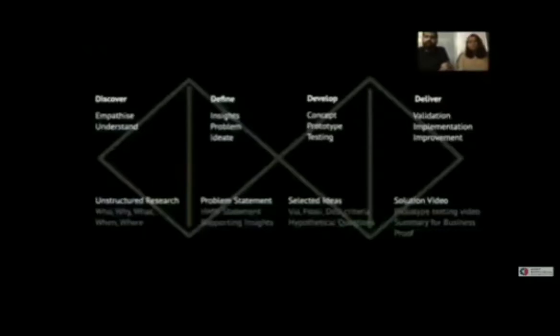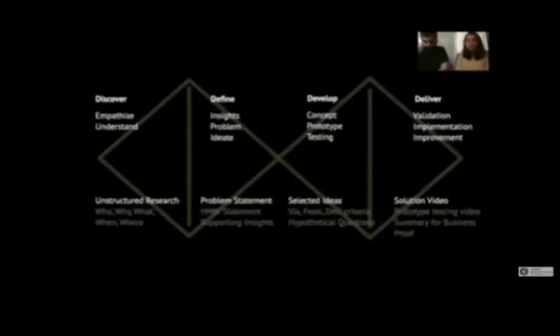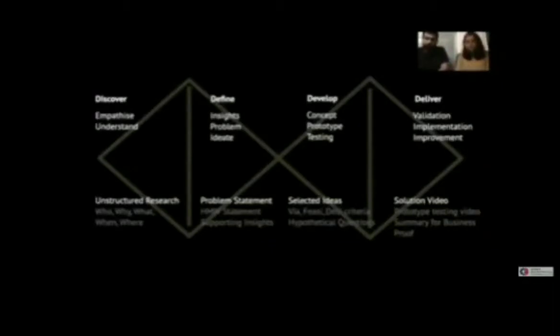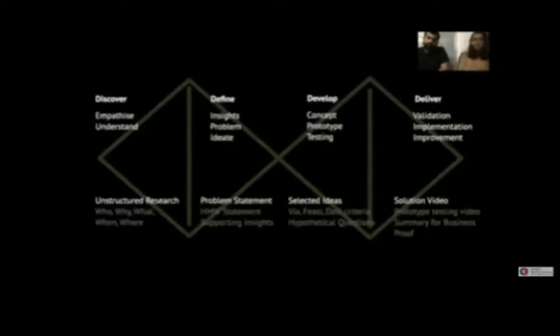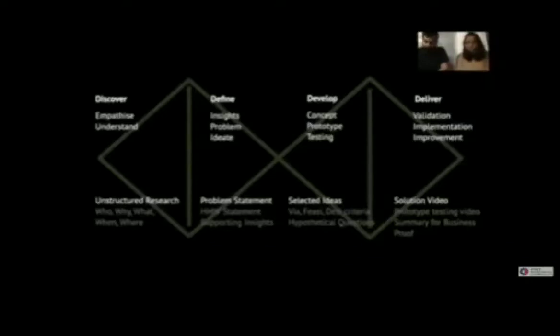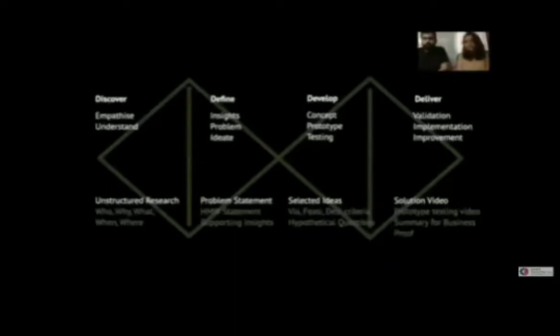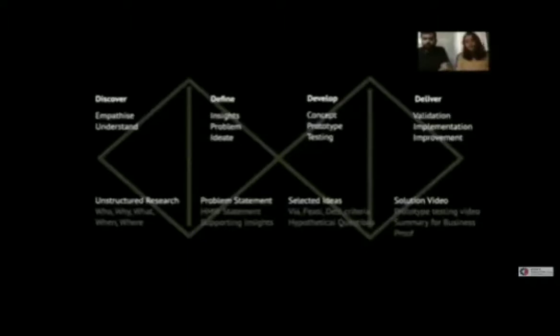What we expect you to design, what we expect you to submit as your POC is these four steps of the double diamond process: discover, define, develop and deliver. In discover, you're expected to submit unstructured research in the form of a Word document which covers all the information related to the problem area or the topic that you have selected. Then you have to submit a problem statement with supporting insights that will help us understand how well you defined the problem. In the develop area, you need to submit ideas and concepts which fit into the viability, feasibility and desirability criteria along with hypothetical questions that will support your selected ideas.